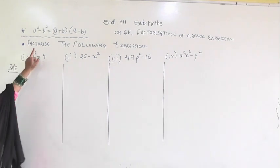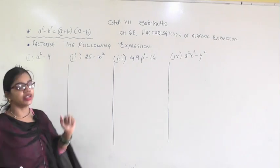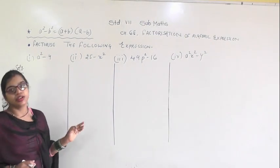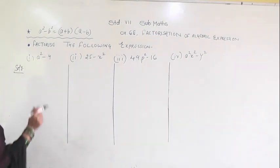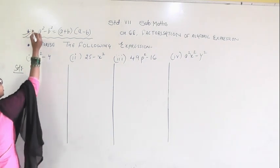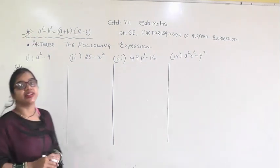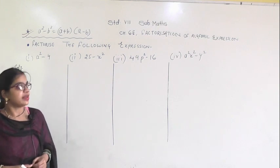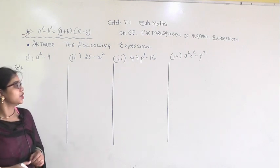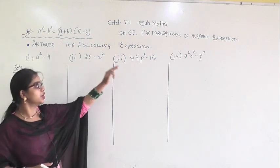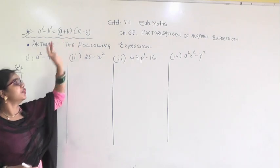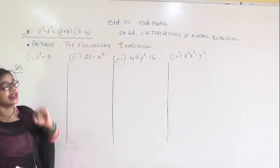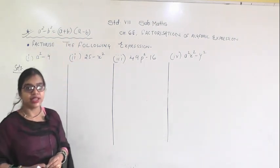In the first question we factorize the following expression. Before solving this, you have to note down this formula: a squared minus b squared equals (a plus b)(a minus b). The question will be given to you in this form and you have to convert it into the (a plus b)(a minus b) form.